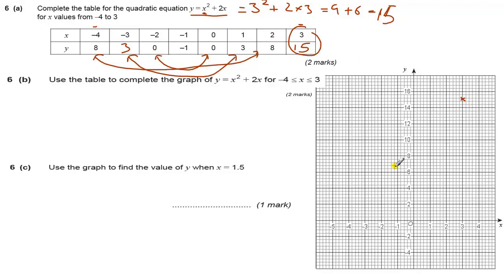Then we've got 2 and 8, cross to 2, up to 8. Then 1 and 3, cross 1, up to 3. 0, 0. Minus 1, minus 1. Be careful that this is minus 2, don't go down to the minus 2, go to the minus 1. Minus 2, 0. And minus 3, 3. Minus 4, 8.